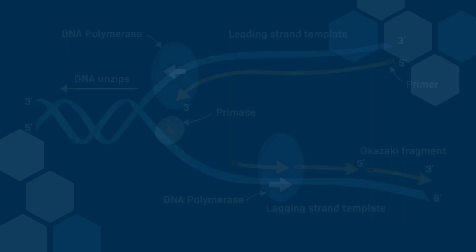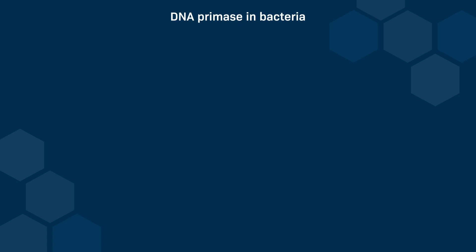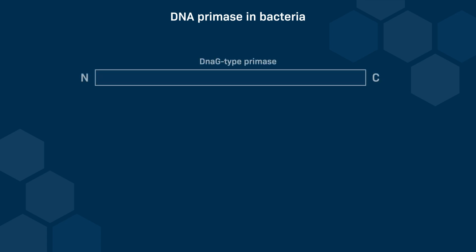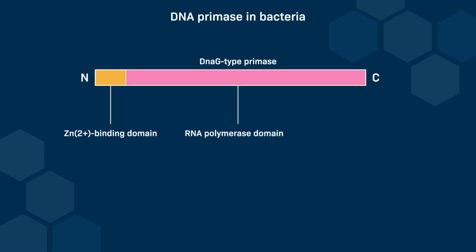Let's look at the DNA primase in bacteria. It's a single protein called DNAG that contains three functional domains. The N-terminus zinc binding domain is responsible for the interaction of DNAG with DNA. In the middle part of the protein, there is an RNA polymerase domain that is responsible for the synthesis of RNA. At the carboxy end of the primase, there is a helicase binding domain that unwinds the DNA double helix.